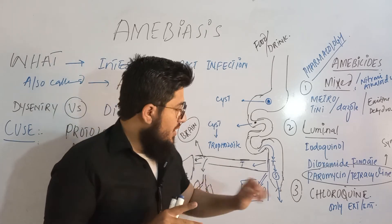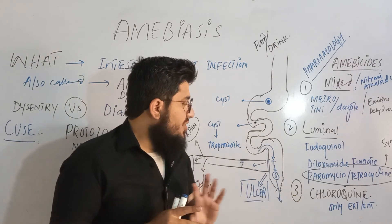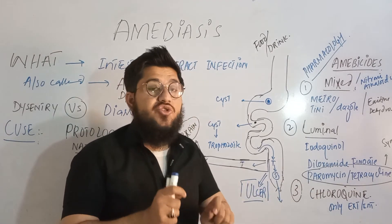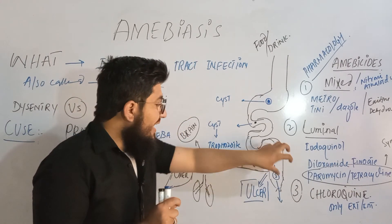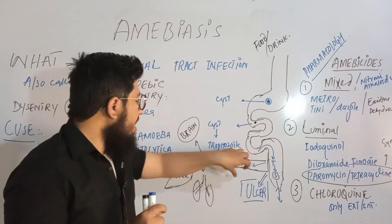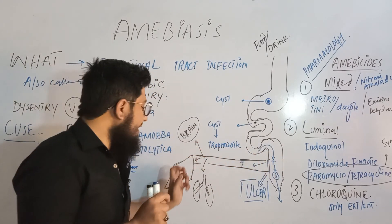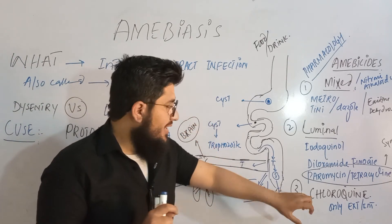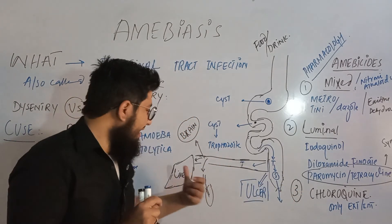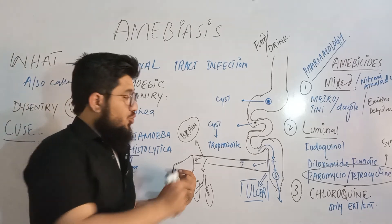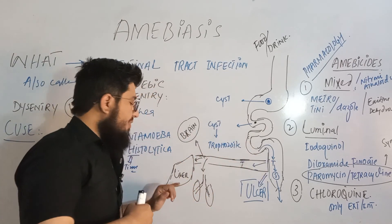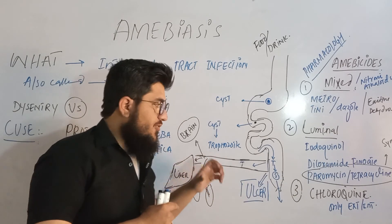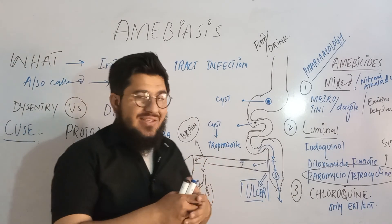The third class is chloroquine, which is used only extra-intestinally. Trophozoites that enter the body reach the liver, lungs, and brain. Chloroquine is responsible for killing the hepatic trophozoites — those that have reached the liver — destroying them in the extra-intestinal region.